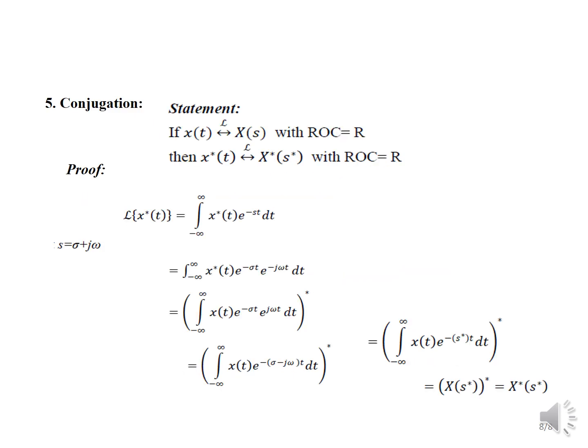Conjugation property: if the Laplace transform of X(t) is X(s) with ROC equal to R, then the Laplace transform of X*(t) equals X*(S*) with ROC equal to R. To prove this, we evaluate the integral of X*(t)·e^(−st) dt. Since S is a complex variable with S = σ + jω, applying this condition and simplifying, we split the term to get e^(−(σ − jω)t), which corresponds to X*(s). Therefore, we can write this as X*(S*). This concludes the properties of the Laplace transform. Thank you.